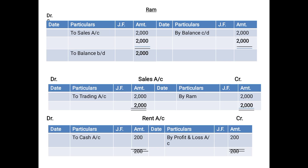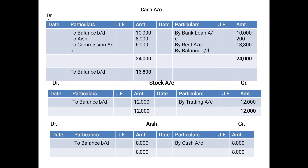Now let's go through how the accounts are balanced. When balancing the Cash Account, total the debit and credit sides. The debit side was greater than the credit side, with a deficiency of 13,800 — shown as 'By Balance Carried Down'. The subtotal is 24,000. Since we wrote 'By Balance Carried Down' on the credit side, it is brought down on the debit side as 'To Balance Brought Down'. Note: write the carried-down amount — not the total.